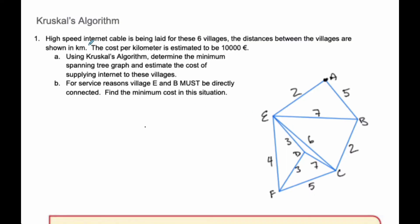So here we have high-speed internet cables being laid for these six villages, and the distance between the villages are shown in kilometers. The cost per kilometer is estimated to be 10,000 euros. Using Kruskal's algorithm, determine the minimum spanning tree graph and estimate the cost of supplying internet to these villages.